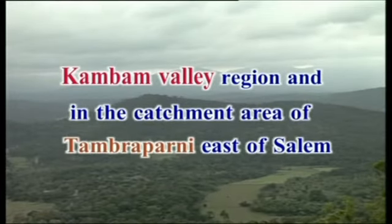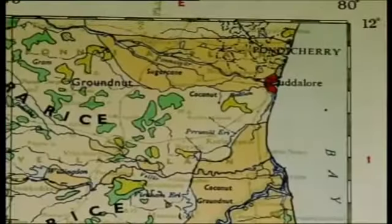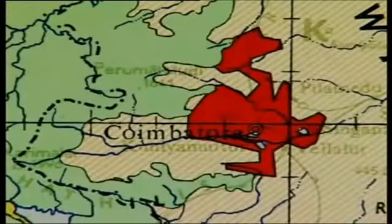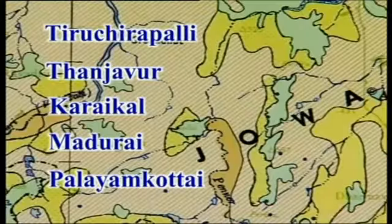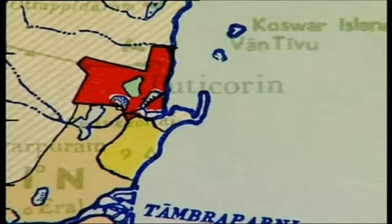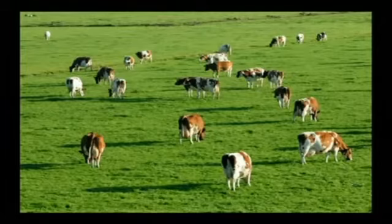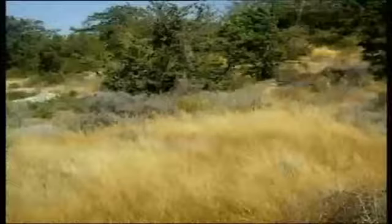Protected forests are also seen in the northwest region, Kumbam Valley region, and in the catchment area of the Tamraparni, and east of Salem. Under non-agricultural land, we have urban and rural settlements and some mining areas. Major urban areas in Tamil Nadu include Puducherry, Cuddalore, Salem, Tirupattur, Coimbatore, Ooty, Tiruchirappalli, Thanjavur, Karaikal, Madurai, Palayamkottai, Tuticorin, Ramanathapuram, and Nagercoil. In Kerala: Thiruvananthapuram, Kollam, Alappuzha, Ernakulam, Kozhikode, Thrissur, Malappuram, Kannur, and Palakkad. Rural settlements along the slopes of the Western Ghats and the coastal belt of Kerala are very distinct. A few pockets of grazing land and scrubland are also distributed in a scattered manner. Not much unproductive land exists in this region.